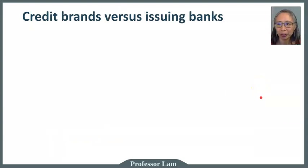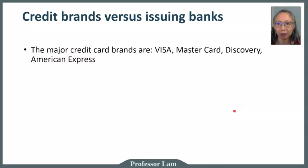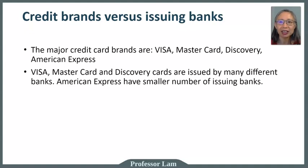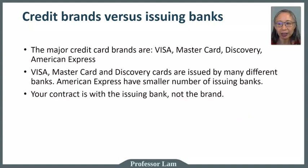A common confusion among consumers is the difference between the credit card brand and the bank that is issuing the card. There are a few major brands — those are the credit card brand companies — and they include Visa, MasterCard, Discover, and American Express. These cards are issued by many banks and institutions. American Express has a smaller number of issuing banks, but the cards are still issued by the bank. The brand companies — American Express or Visa — manage the brand; they are not the ones giving you the loan. The issuing bank is the one giving you the loan, so your contract is with the specific bank that issued the card, not Visa or American Express.